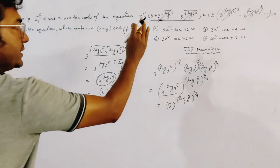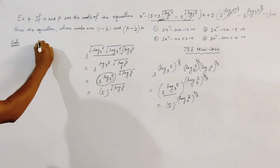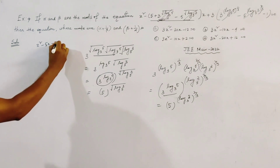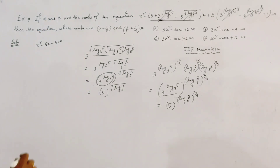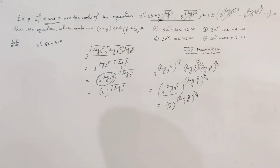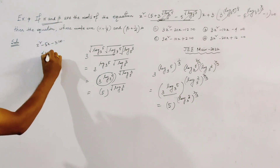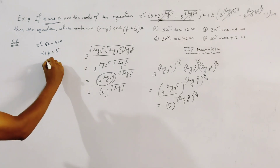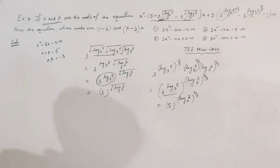After cancellation, the equation reduces to x squared minus 5x minus 3 equals 0. Since alpha and beta are the two roots, by Vieta's formulas we have alpha plus beta equals 5 and alpha times beta equals minus 3.